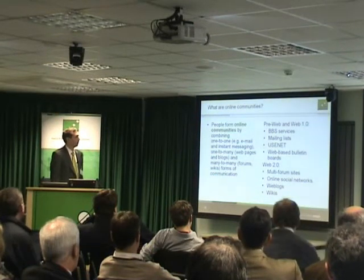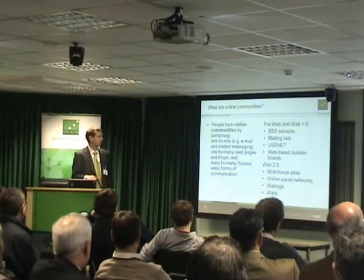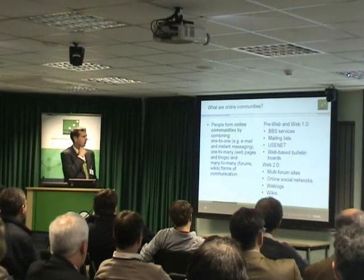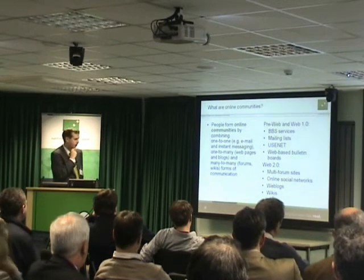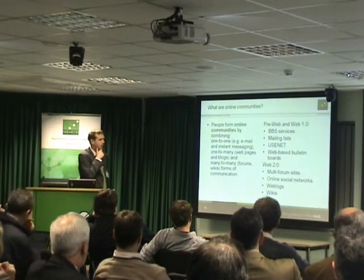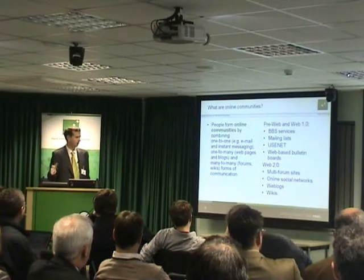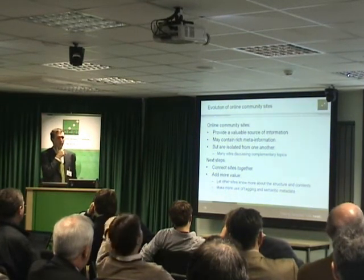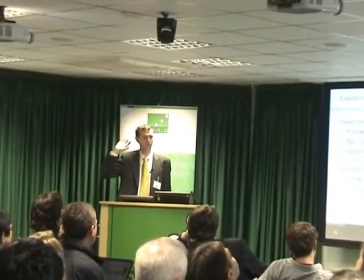There are many different forms of communication in online communities ranging from one-to-one, one-to-many, many-to-one, and a combination of these can be thought of as an online community. Before web 2.0, there were things like BBS services accessed over modem, Usenet which we still use now, and web-based bulletin boards. After web 2.0, things emerged like multi-forum sites, online social networking sites where people make business, professional, and personal connections, web logs, and wiki sites. When you go into Google searching for something, more often than not you end up with some kind of community site — results on a mailing list with an online presence, bulletin board, or web log. Very often the results come back on these sites.